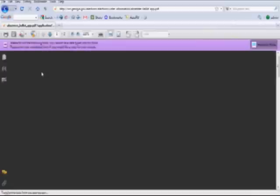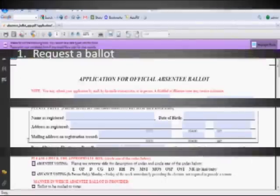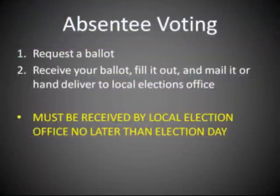Once you've completed your application, you should mail it to your county election office. Keep in mind, you should request an absentee ballot in enough time to allow your county election office to receive your application for a mail-in ballot, for them to mail you the ballot, and then for you to mail it back to them.